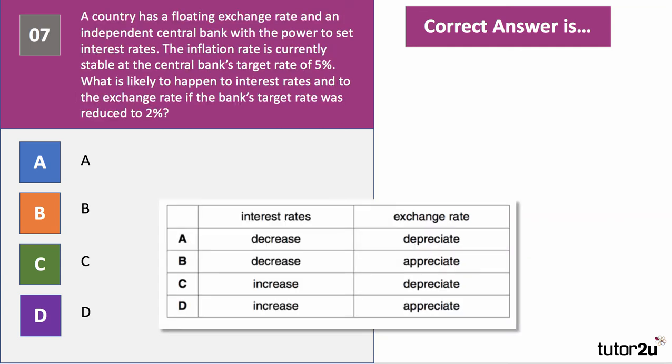If you got that right, hats off to you — that's not an easy question. Question seven is tricky: a country has a floating exchange rate and an independent central bank with the power to set interest rates. The inflation rate is currently stable at the target of five percent. What is likely to happen to interest rates and to the exchange rate if the bank is given a lower inflation target of two percent?